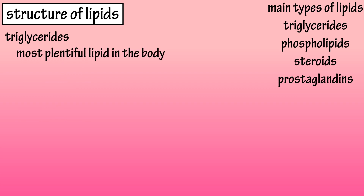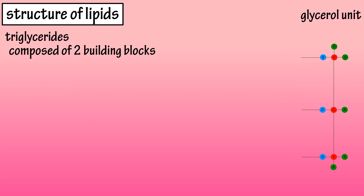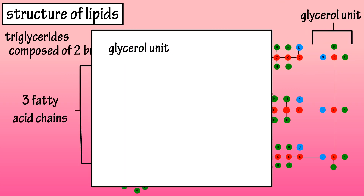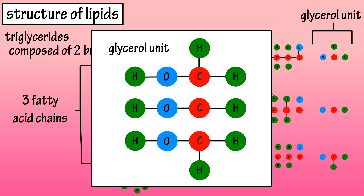Triglycerides are the most plentiful lipid in the body, and they are composed of two building blocks: a glycerol unit and three fatty acid chains. A glycerol molecule has three carbon atoms, with two bonded to two hydrogen atoms and one bonded to one hydrogen atom. They are also bonded to a hydroxyl group, which is an oxygen bonded to a hydrogen, and the fourth bond being to another carbon atom.